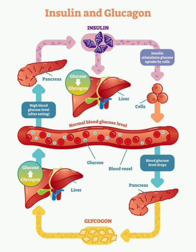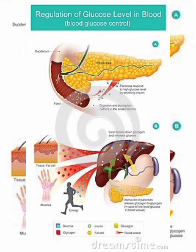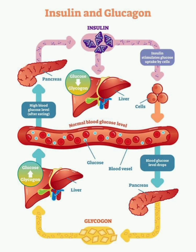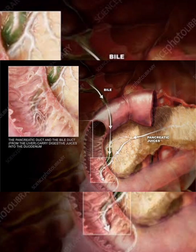The extra glucose comes under the action of insulin. Insulin is a hormone released by cells called Islets of Langerhans of the pancreas. When there is a rise in blood sugar level, the pancreas releases insulin. This insulin acts on the blood to absorb the glucose and convert it into glycogen, which gets deposited in the liver.